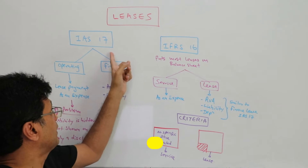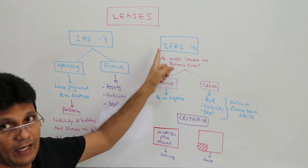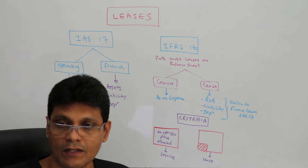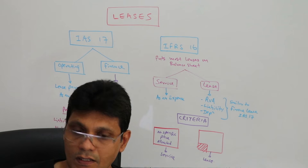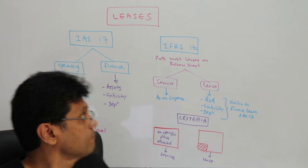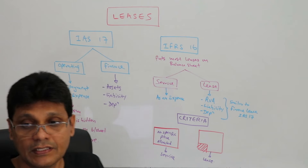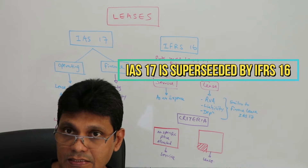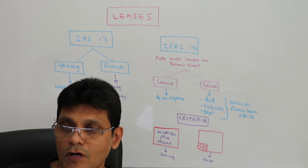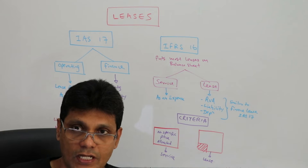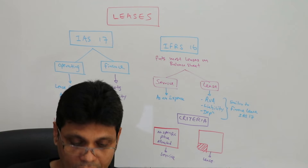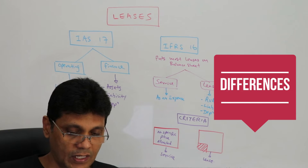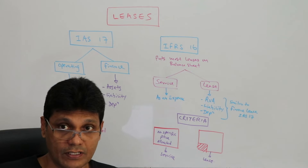IAS 17 has been superseded by IFRS 16 Leases standard, which is effective from 1st January 2019. Now let's look at the main differences between IAS 17 and IFRS 16.